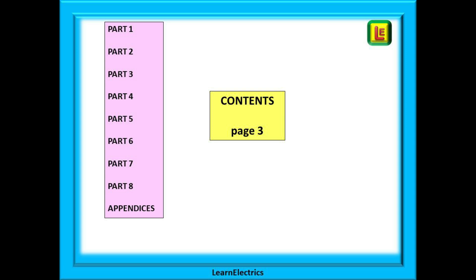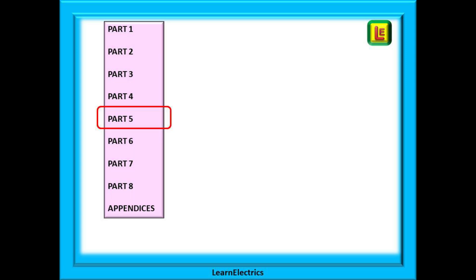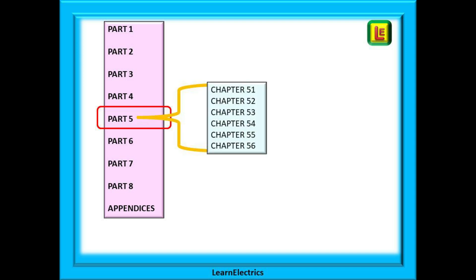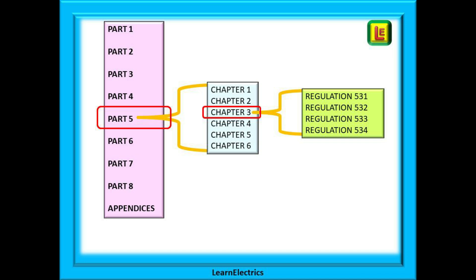This is our go-to page. If we take Part 5 for example, we know that within Part 5 are several chapters. Taking Chapter 53, the third chapter, as an example, this is further split into several regulations. And these regulations will be further divided into sub-regulations and so on.